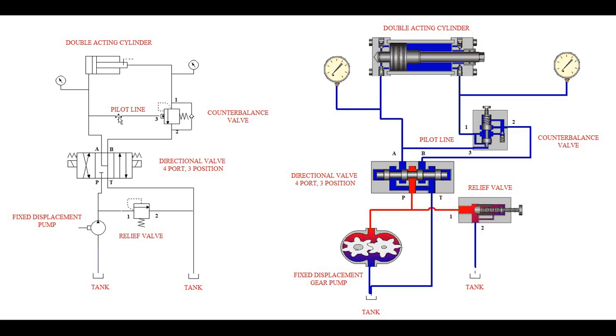For that to happen, it needs to have a pilot signal at port 3. So if we are to extend this cylinder at all, we need to have a pilot signal from port A here into port 3 of our counterbalance valve, moving the counterbalance valve piston off of its land to allow flow from 1 to 2. Again, this will be much easier to visualize once we get to the animation.